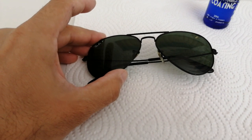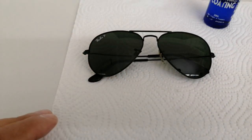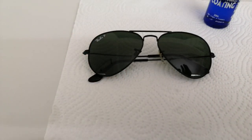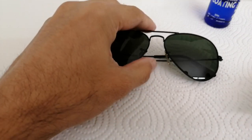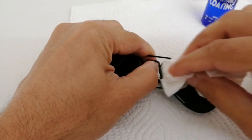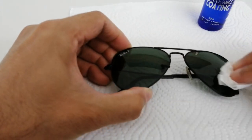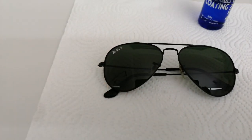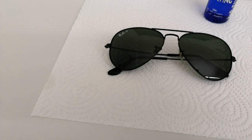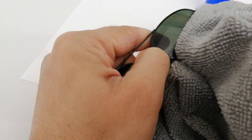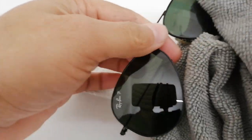Before we even proceed to make the hydrophobic coating, step number one: take a tissue paper and clean the surface of the glasses so that there is no grease. Take a microfiber towel and clean the surface as nicely as possible. Be careful, don't press too hard.